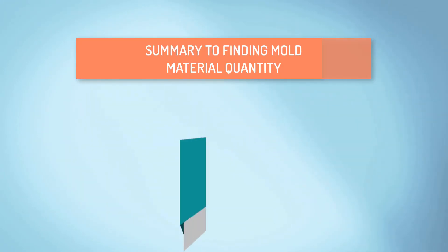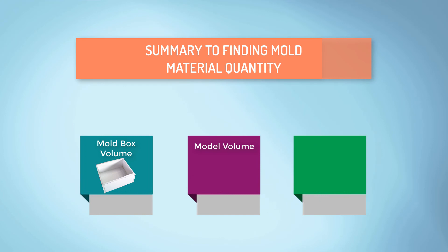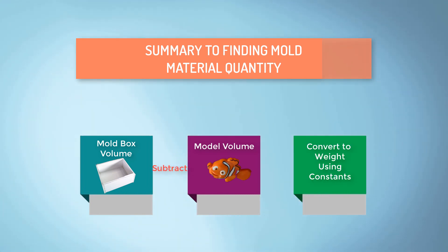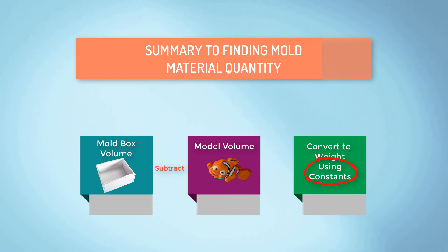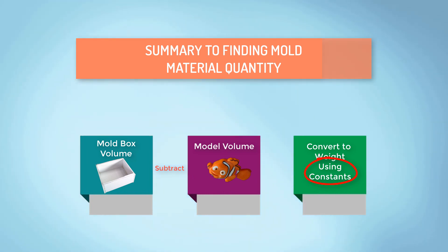It really is that simple. Calculating the exact material quantities needed on any project is just a matter of determining and then subtracting the volume of your model or pattern from the volume of the mold container, and then converting the net volume into weight using the constants described. Using this newfound knowledge, you can be confident that you can precisely figure out the amounts of materials you require on any future mold making and casting project, and in doing so save yourself both considerable time and materials costs.